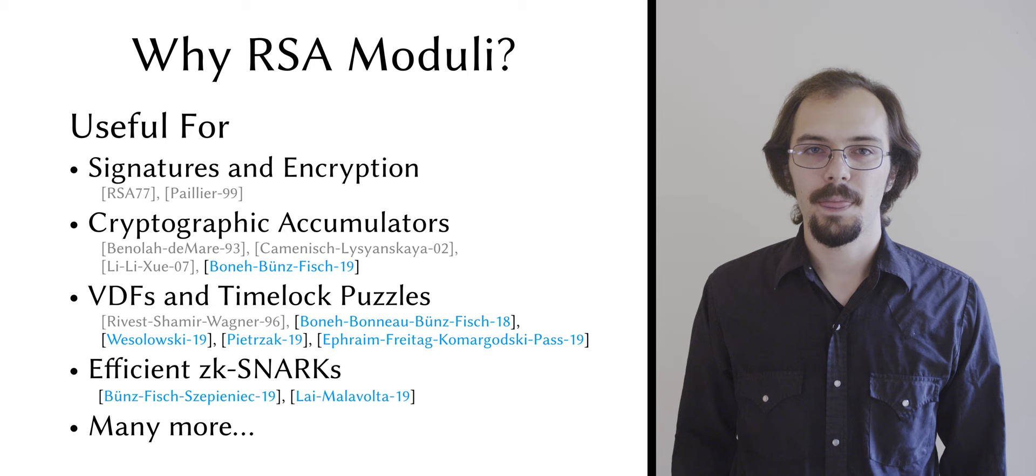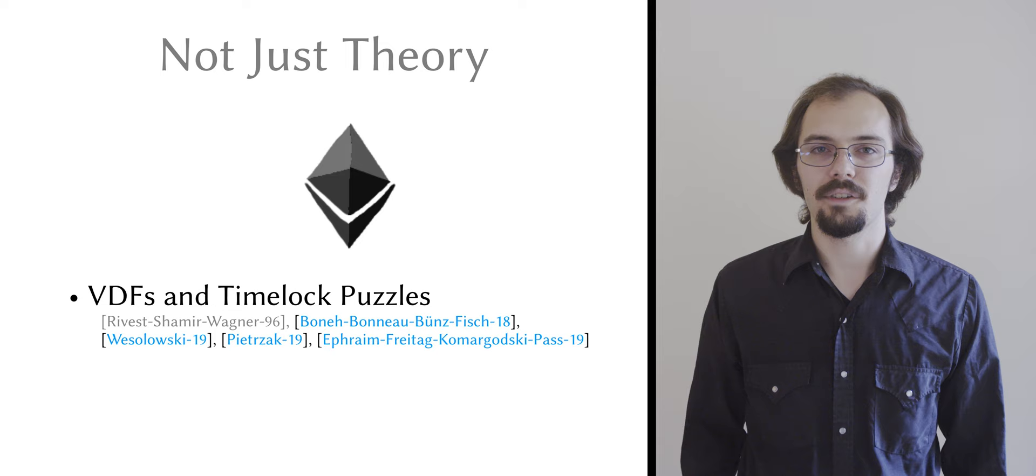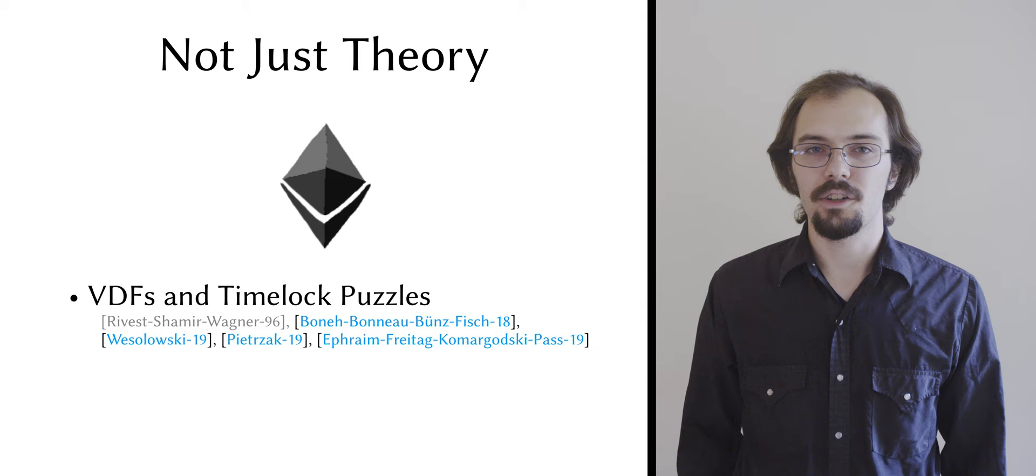This isn't merely a theoretical concern, by the way. The Ethereum Foundation has publicly announced an intention to migrate to RSA-based verifiable delay functions, which means that they need secure bi-prime sampling in the real world, and they need it to be efficient for many parties.